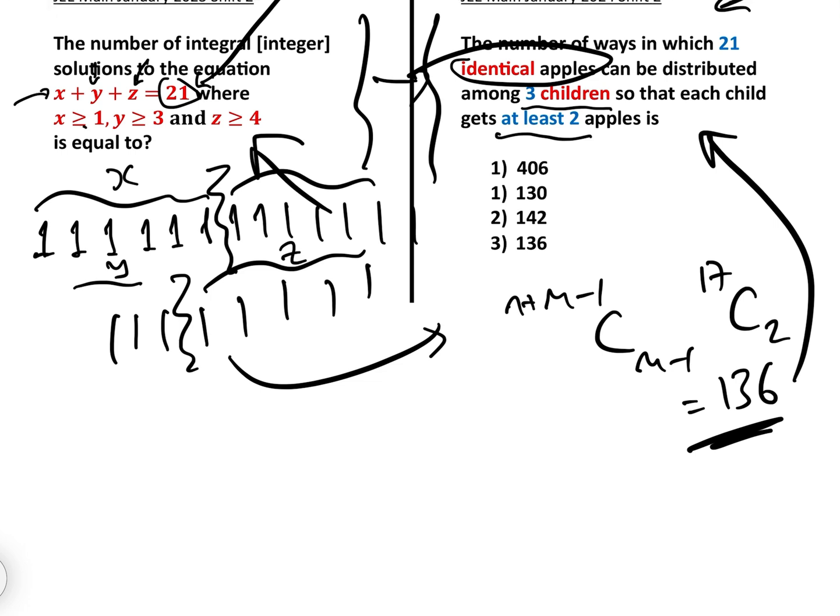All we have to do here is say, okay, well x has got to be greater than or equal to one, so let's give him that one. Y has got to be greater than or equal to three, so let's give y that one. And z has got to be greater than or equal to four, so let's give him those four.